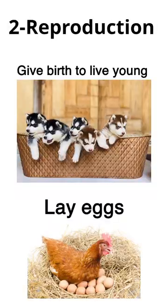What else can living things do? They can reproduce. So, number 2 is reproduction. Reproduction means having a baby or offspring. Some animals give birth to live young, like lions and humans, and some lay eggs, like the chicken.